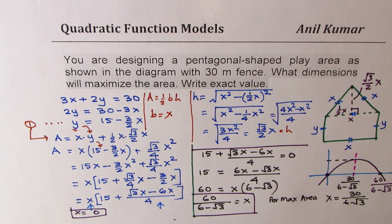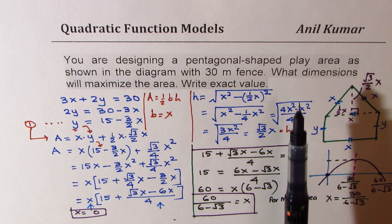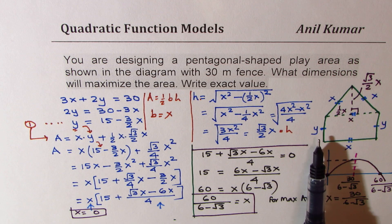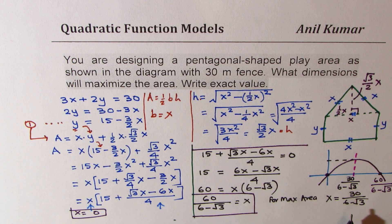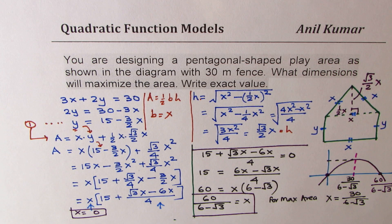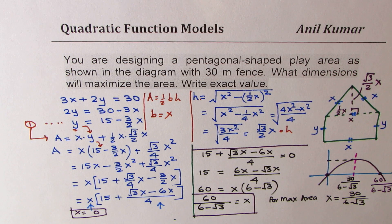We need to find dimensions, meaning we need the y value as well. We should also rationalize x = 30/(6 − √3). The major portion of the solution is done. Let's move on to find y and rationalize the solution.